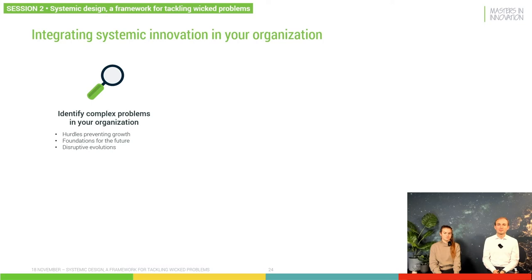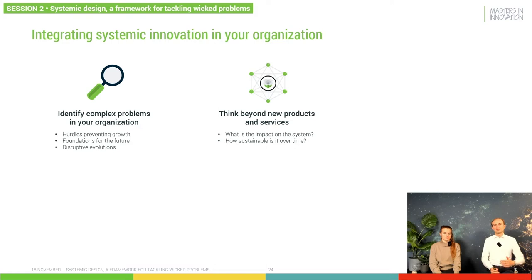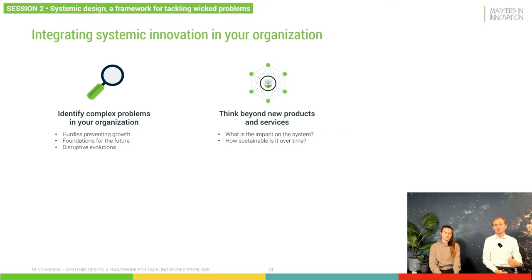A second important step is to think beyond introducing new products and services. Of course, as a value-generating organization, it's important that you also introduce products and services that are of value to your customers or other stakeholders. But when you're going to tackle these complex problems, it's also important to realize what the impact is on the system. Remember what Ornella talked about with the cobra effect — sometimes an overly simplistic solution is not the answer to a complex problem.